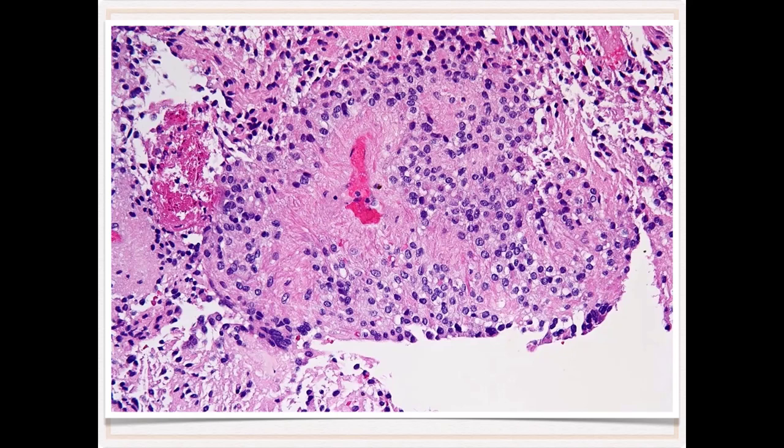On higher power view, tumor cells are sending processes to the blood vessel and maintain this distance between the nucleus and the actual blood vessel, producing the perivascular pseudorosette. This is very characteristic for ependymoma.